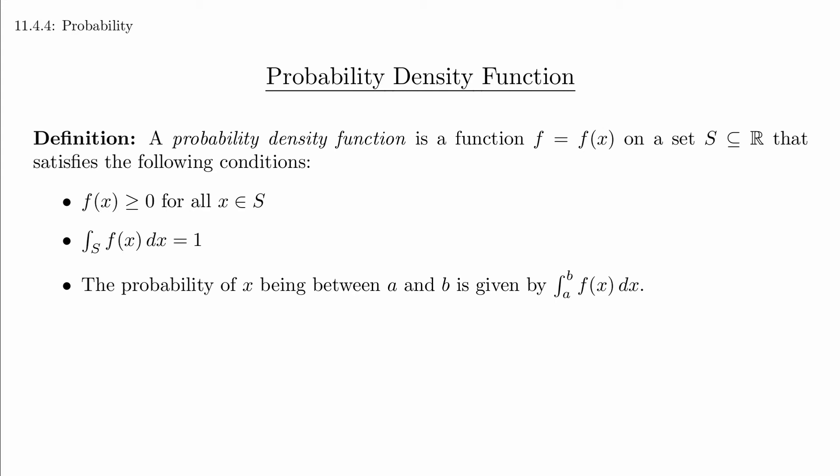The probability of x being between a and b is the integral of f(x)dx from a to b. This is how we convert the probability density into a probability. This is analogous to integrating over a mass density to get mass.